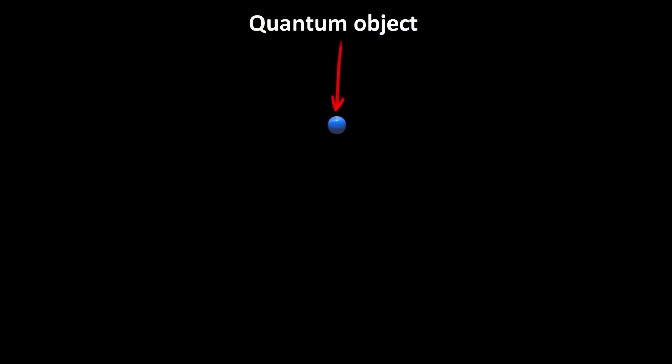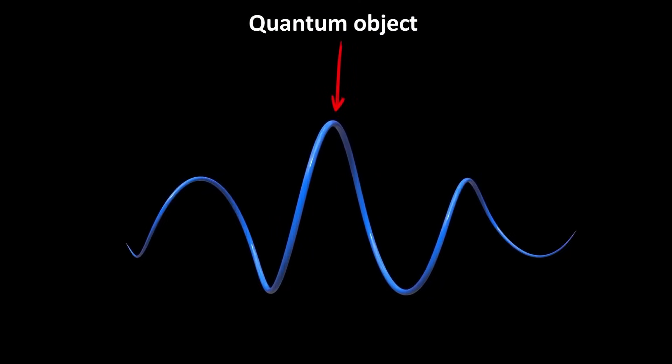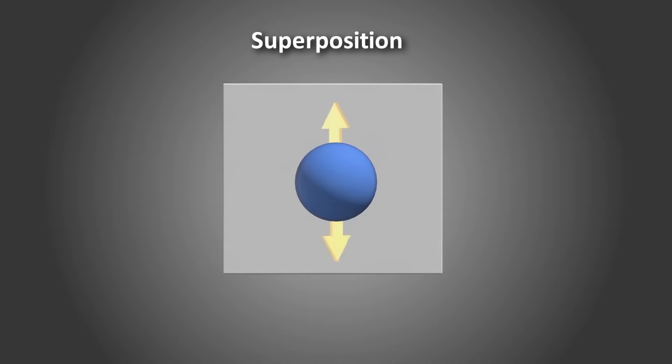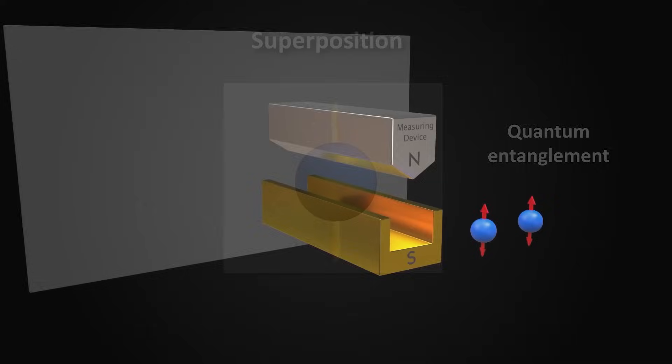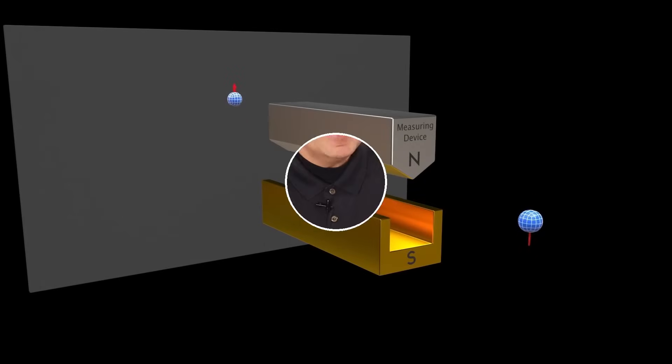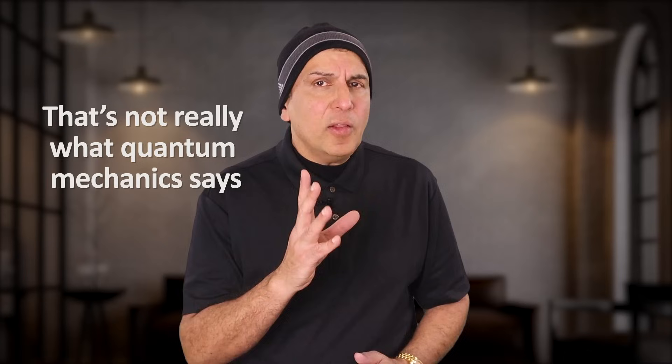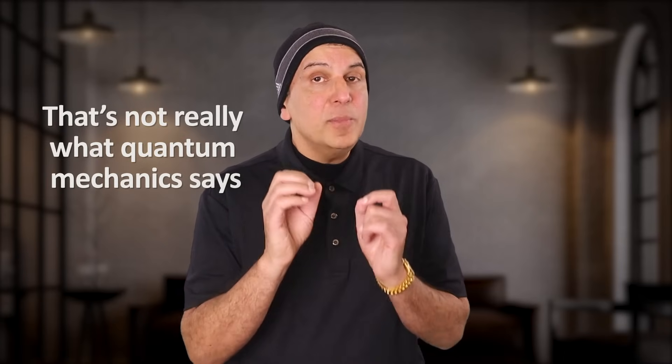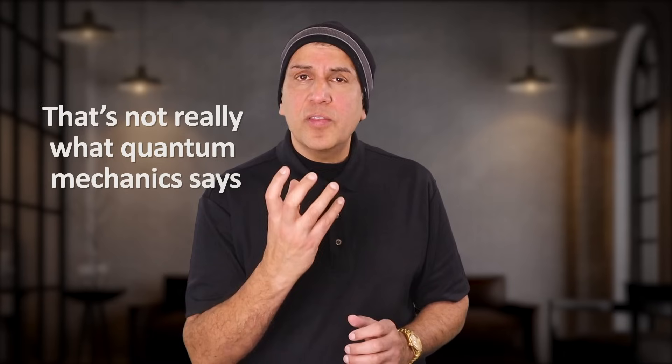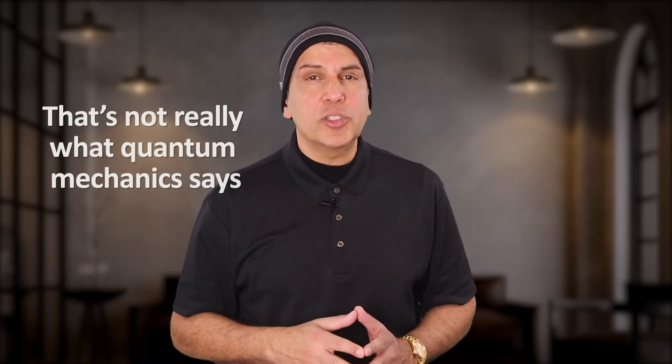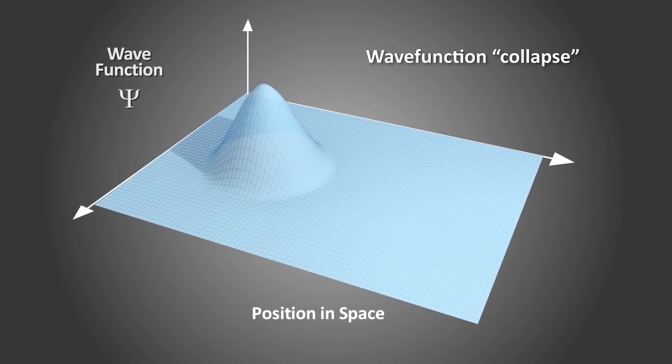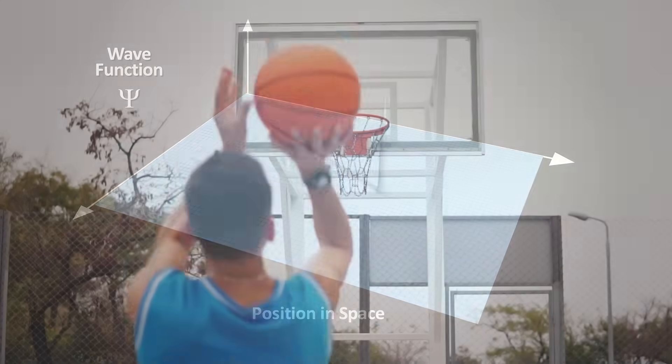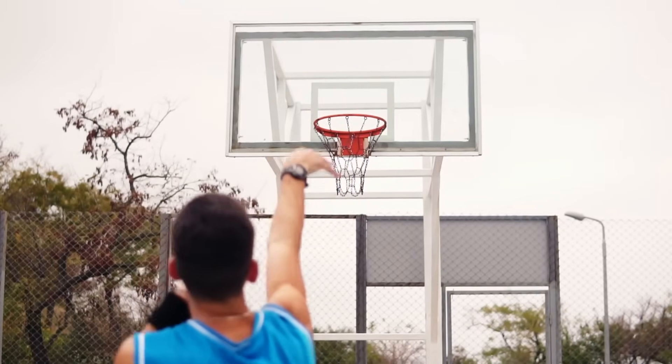For example, particles appear to be fuzzy and spread out. They seem to be in two places at once, or two different states at once, or affect each other instantly over any distance. But is this really what quantum mechanics says? All these claims are no more than clumsy attempts to interpret the theory using everyday language. But everyday language wasn't designed for the quantum world. It was designed for the macro world of classical physics, which is what we observe at human scales.